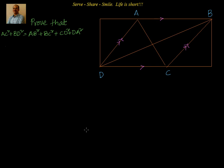We have converted the given parallelogram into a rectangle. What we did is very simple. We extended DC so that we have a 90 degrees angle, and we also extended BA so that we have a 90 degrees angle. We got the rectangle. Now let us put down some values. We know that opposite sides of a parallelogram are equal, so AB = CD = X. Let us call this rectangle ABCDEF.